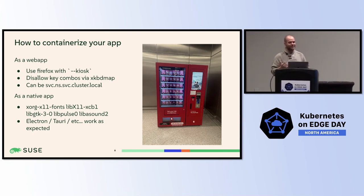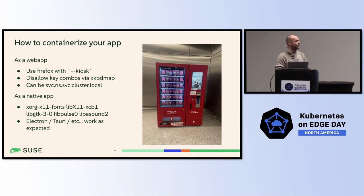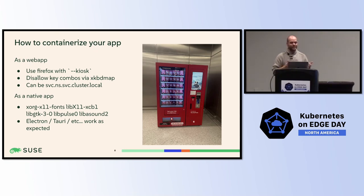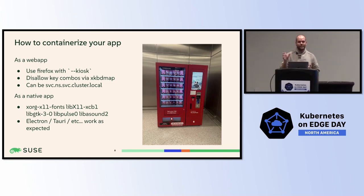So how do you containerize your application itself? You have two basic options. Either you can use a browser and host a web app, or you can build your own native application. When you're working with a web app, we've got a container that has Firefox installed in it that automatically starts up with a kiosk flag, so it comes up full screen. You also want to disallow key combos via the X keyboard map configuration. One of the cool things about this is that the site you're loading can be a service in the Kubernetes cluster, because you're already local to that cluster, so all of the normal routing and DNS resolution just works.